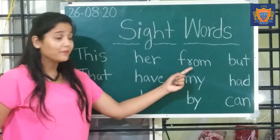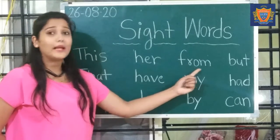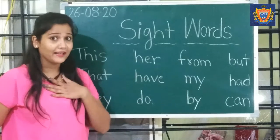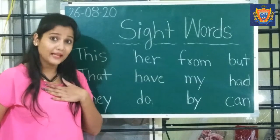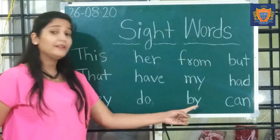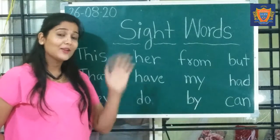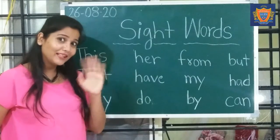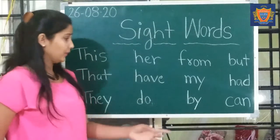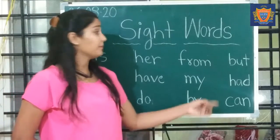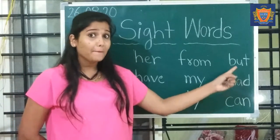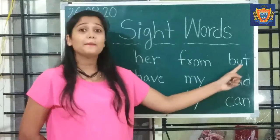From. F-R-O-M. From. My. M-Y. 'My' means 'mera' — belonging to me. By. B-Y. 'By' means through something — not the goodbye 'bye,' but 'by' as in through something. But. B-U-T. But.